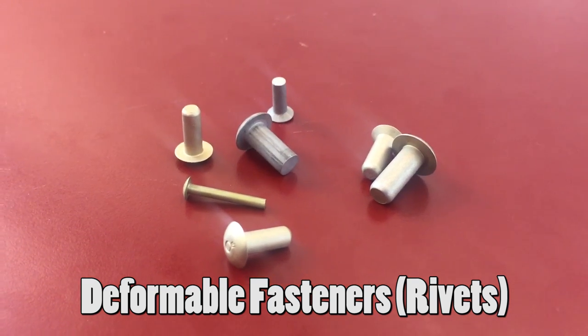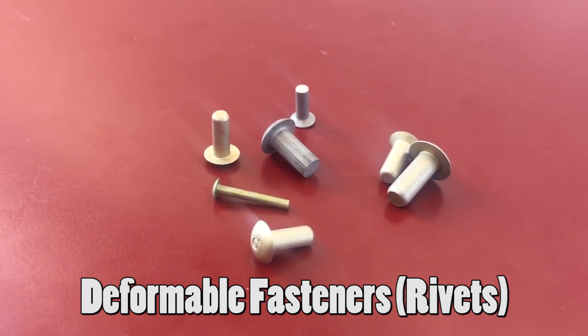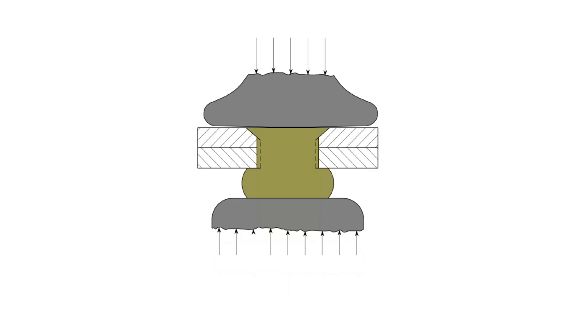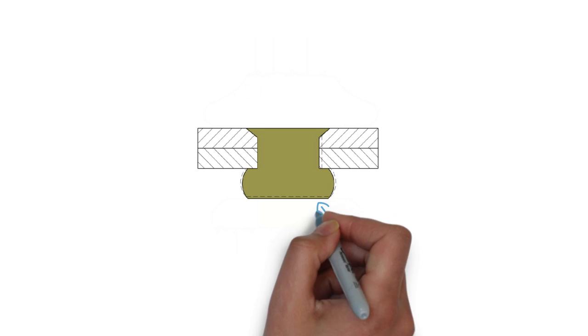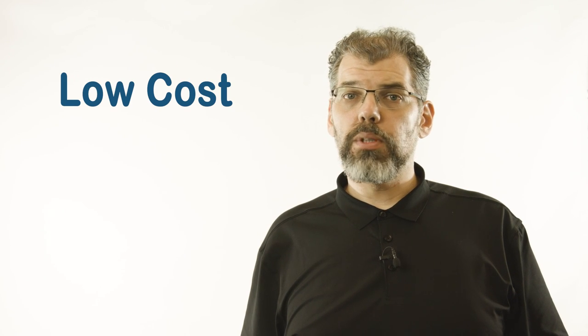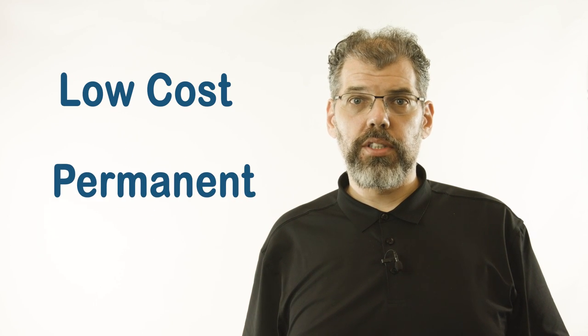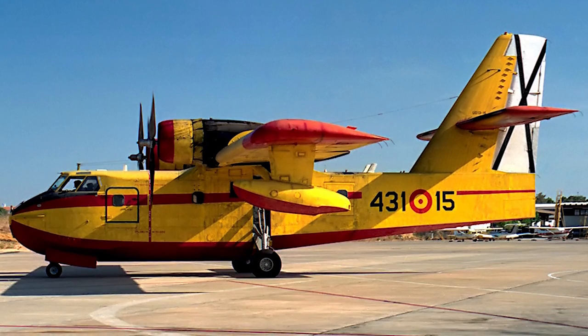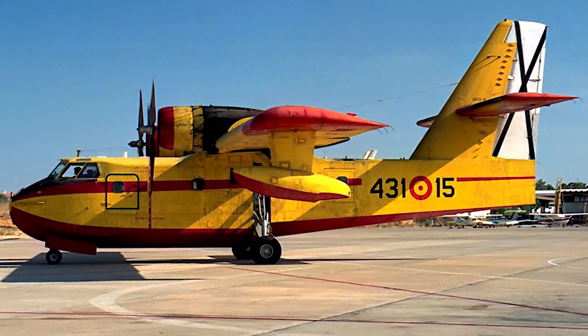The second category is deformable fasteners, also commonly referred to as rivets. This type of fastener relies on plastically deforming material inserted through a hole in order to form a fastener head that is larger than the hole it was originally passed through. This type of fastener is relatively cheap to produce and forms a permanent connection between the two parts that cannot vibrate loose during operation. These two points make rivets one of the most common fastener types in the assembly of aircraft structures.